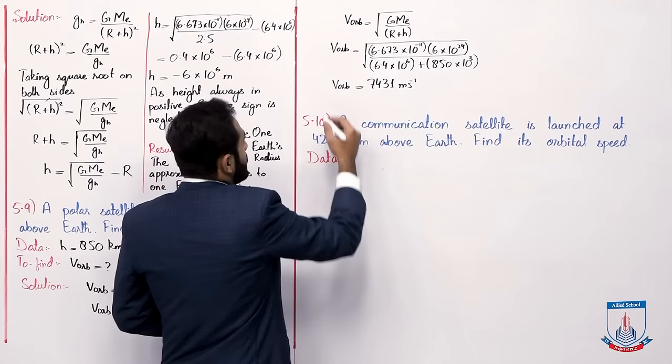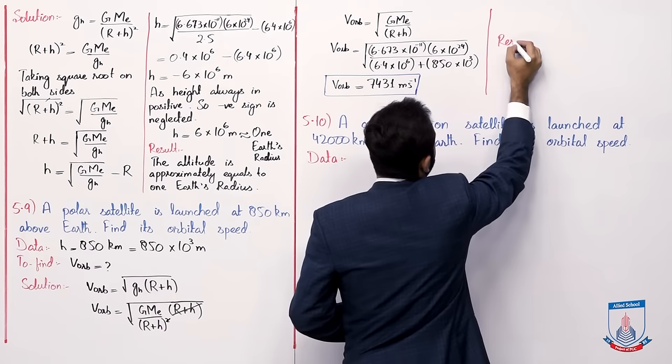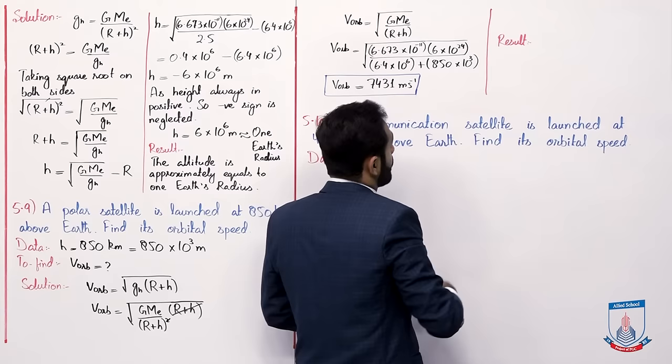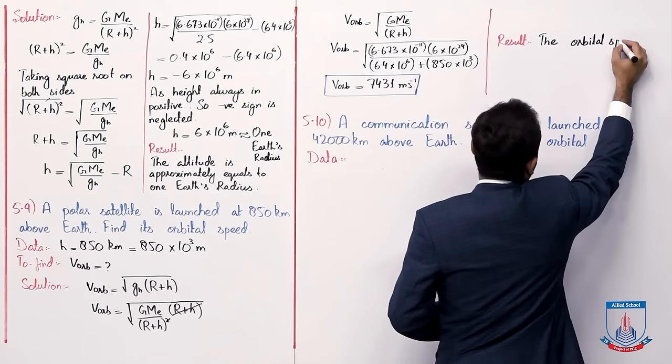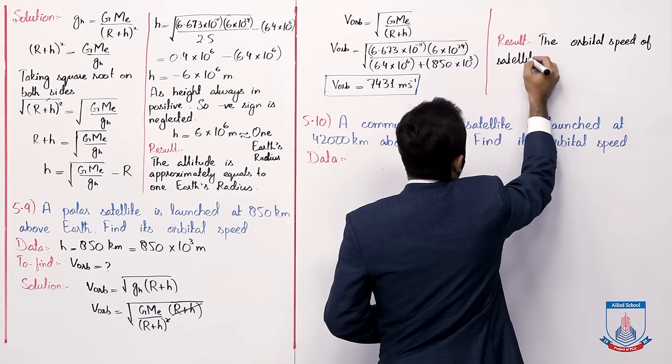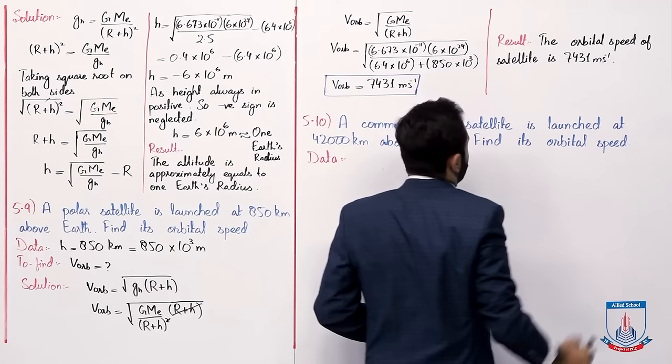The final answer is 7,431 meter per second. The orbital speed of the satellite is 7,431 meter per second.